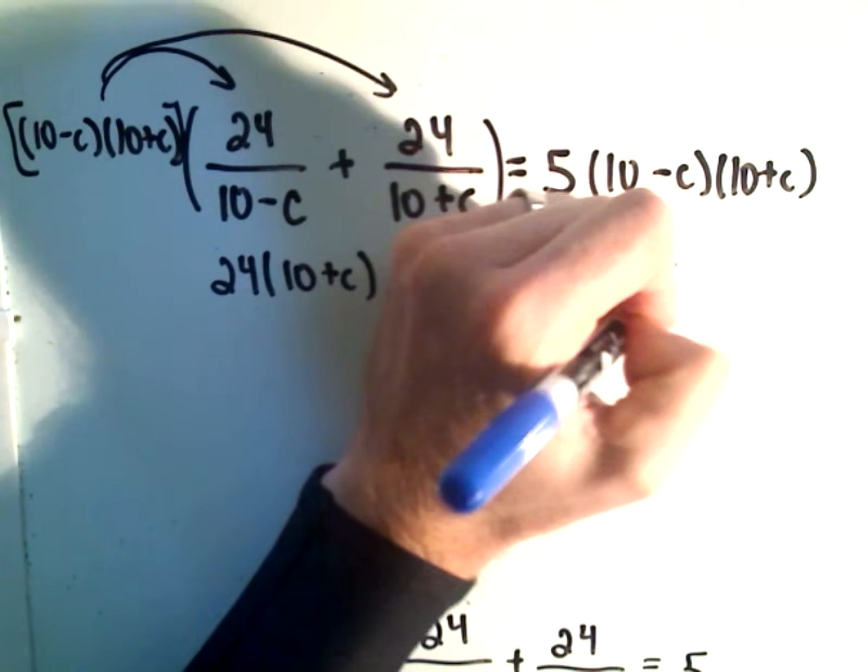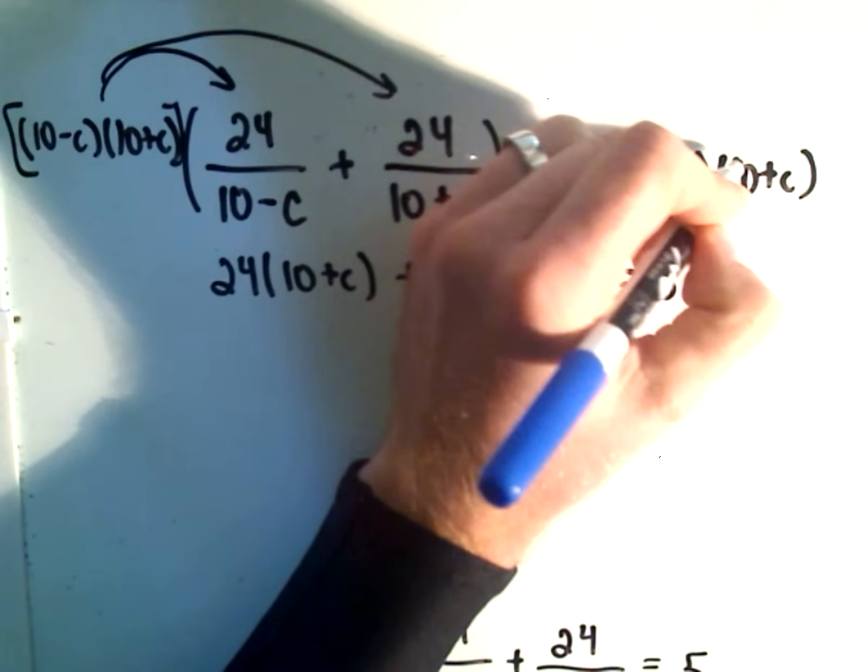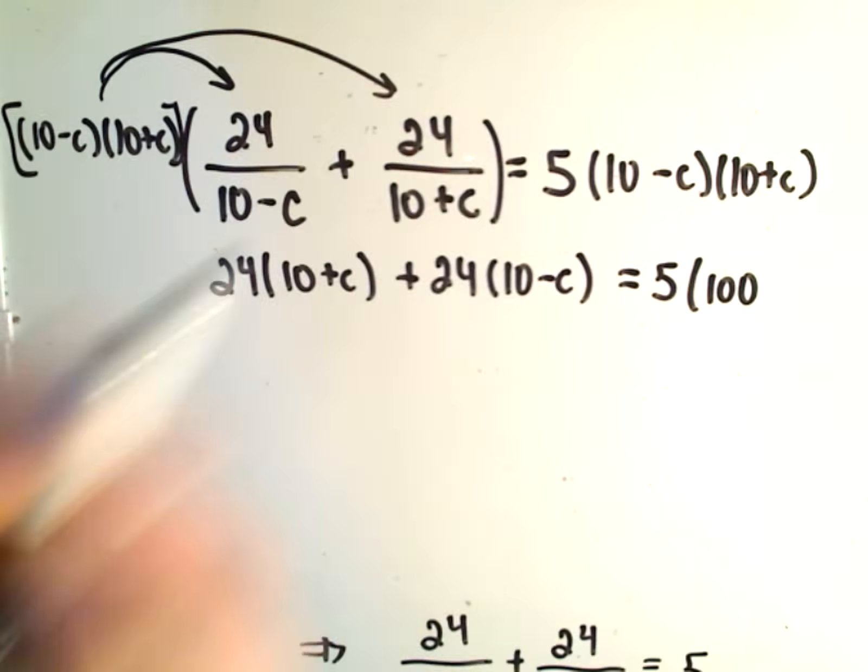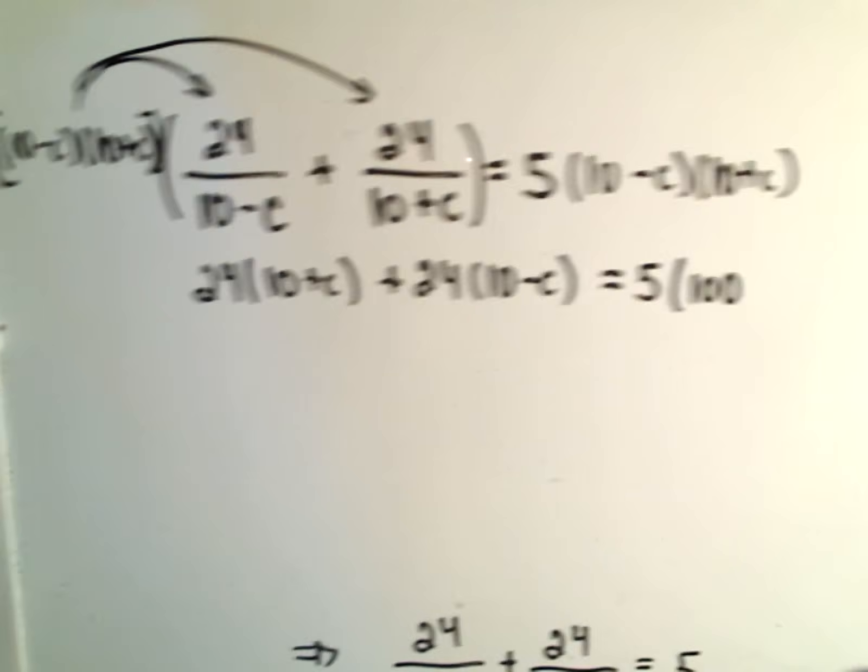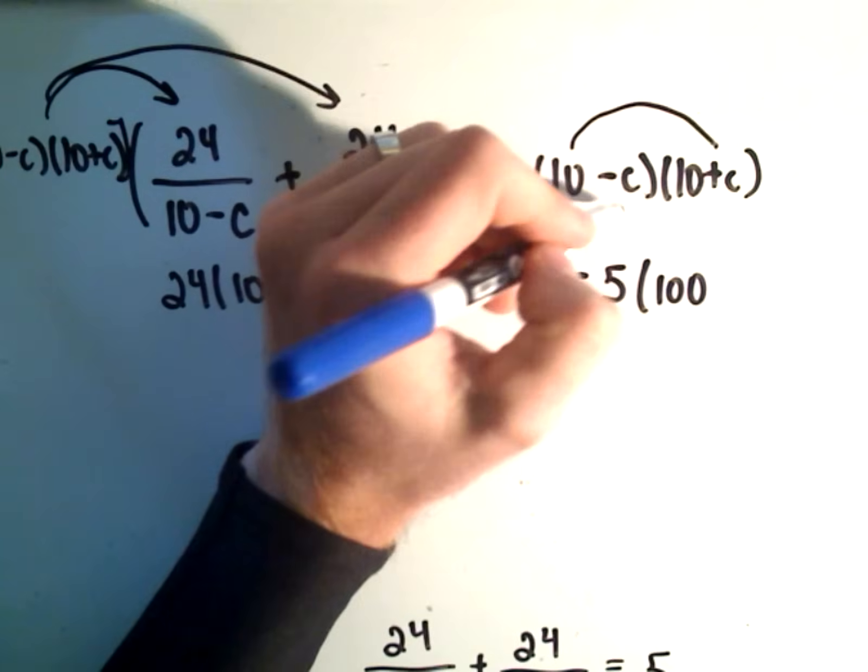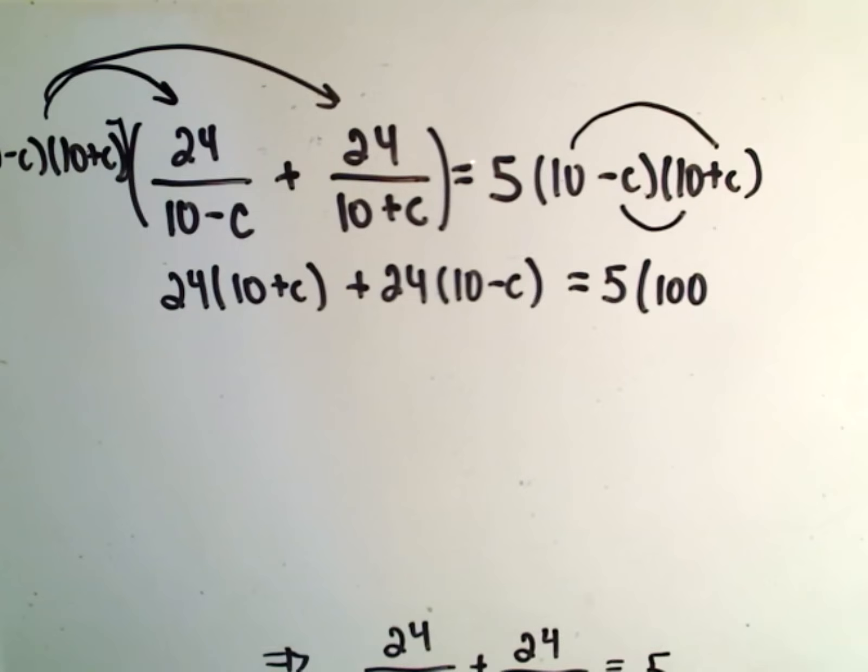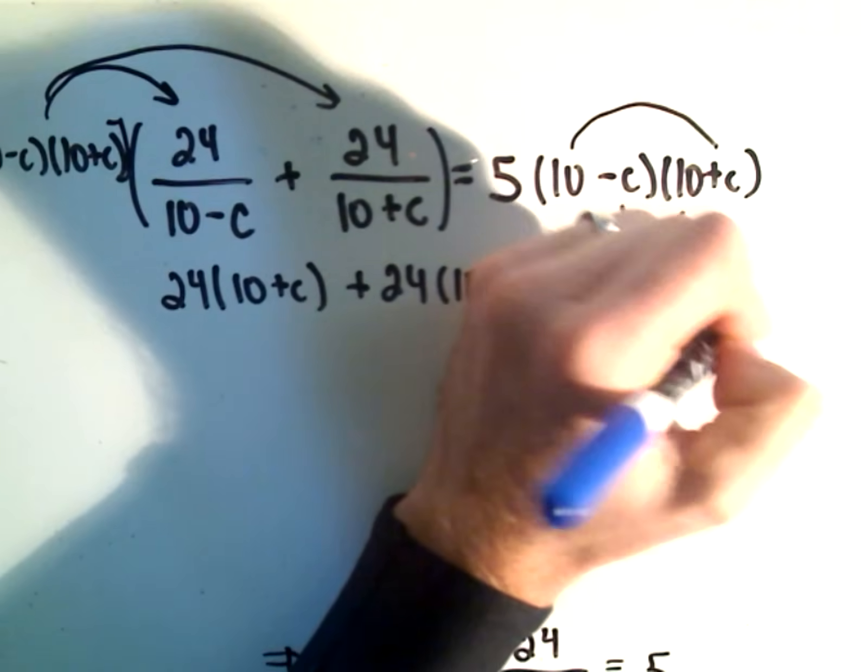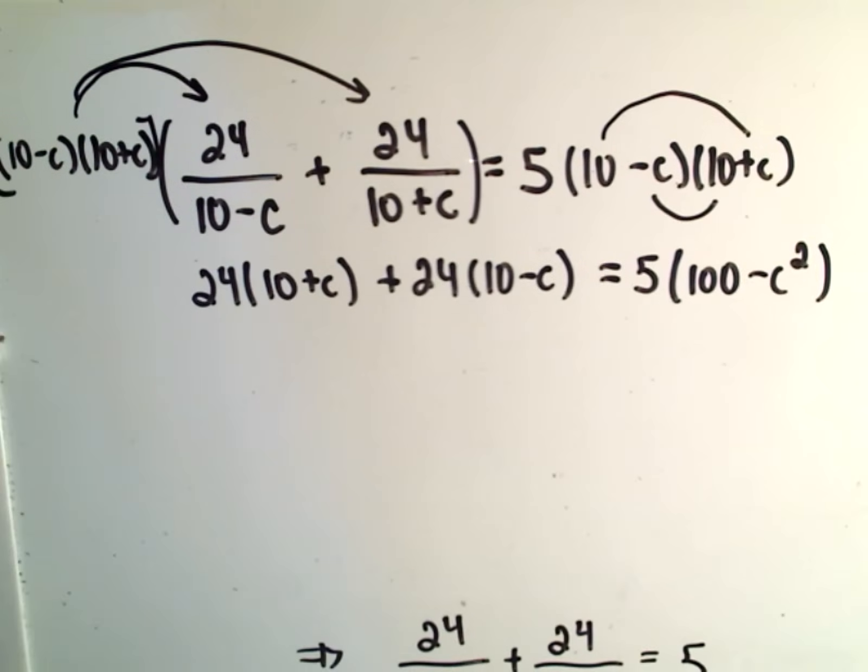On the right side, we have 5. If I foil this out, I'm going to get 10 times 10, which is 100. Then I'm going to get a positive 10C, but then a negative 10C. That'll cancel out and then I'll be left with minus C squared.